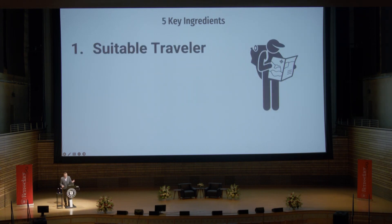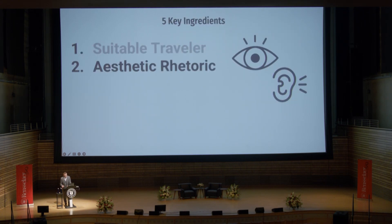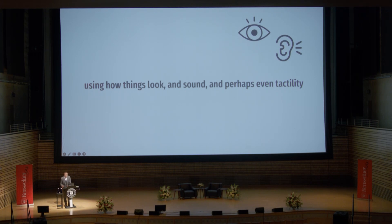So that's our first key ingredient. We need a suitable traveler. I recommend a human. I recommend someone who's not too tired, someone who has about two, three, maybe four hours to spare, and someone critically with the right mentality. The next four things we need are all rhetorical devices — ways of persuading our would-be traveler about what it is we want them to experience. The first of these is aesthetic rhetoric. This is about how things look, how they sound, and perhaps to do with tactility.